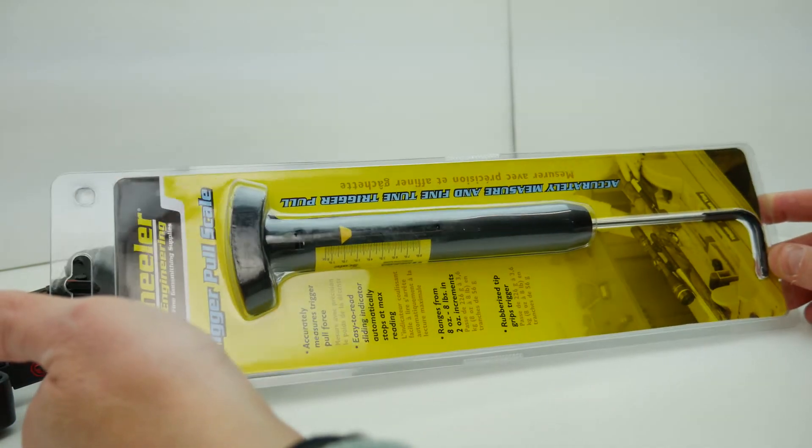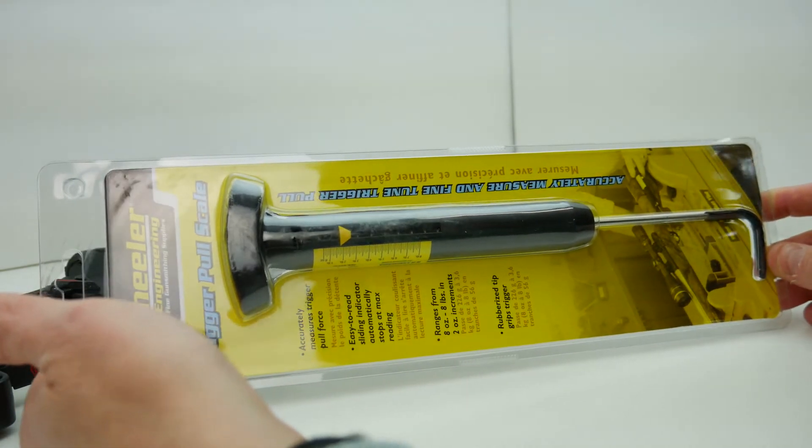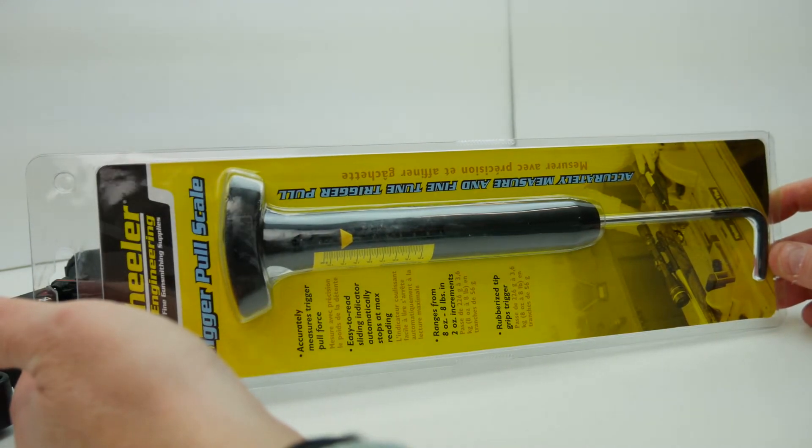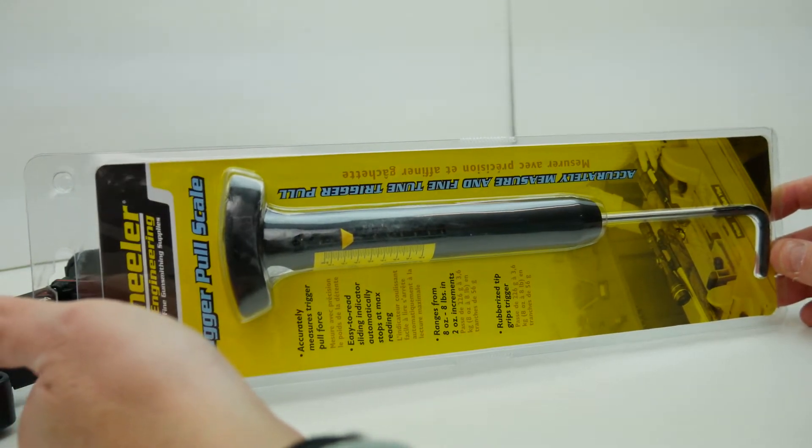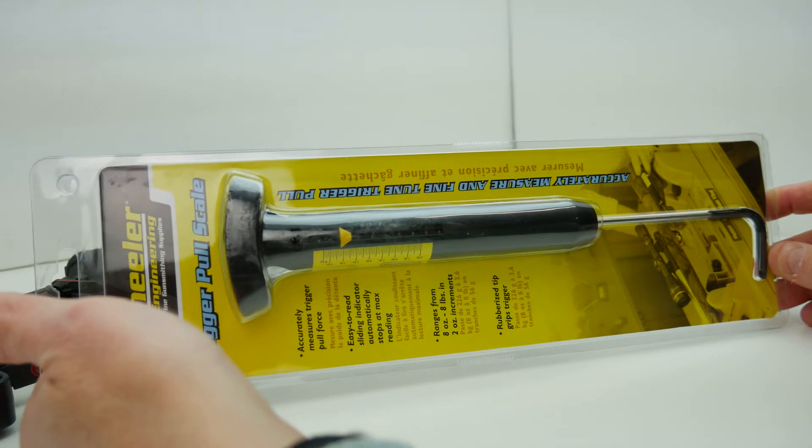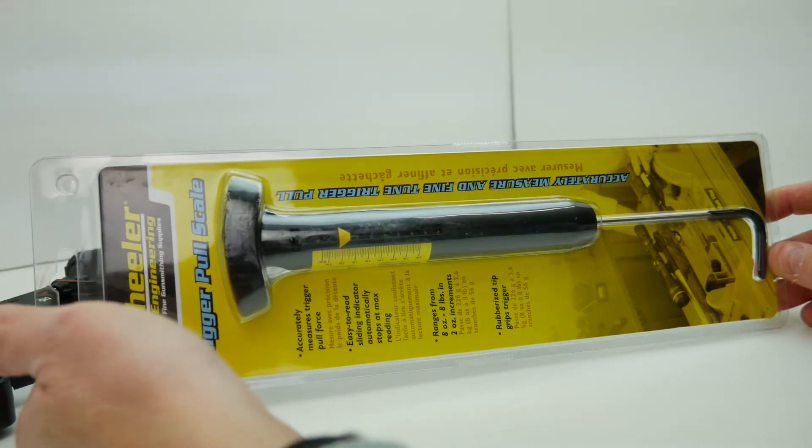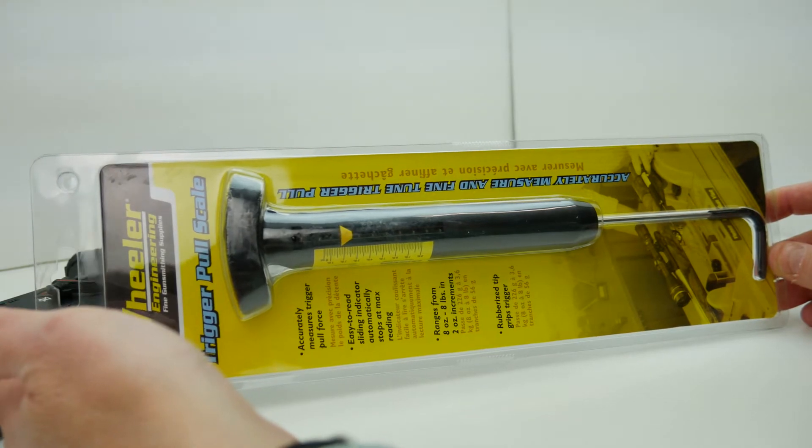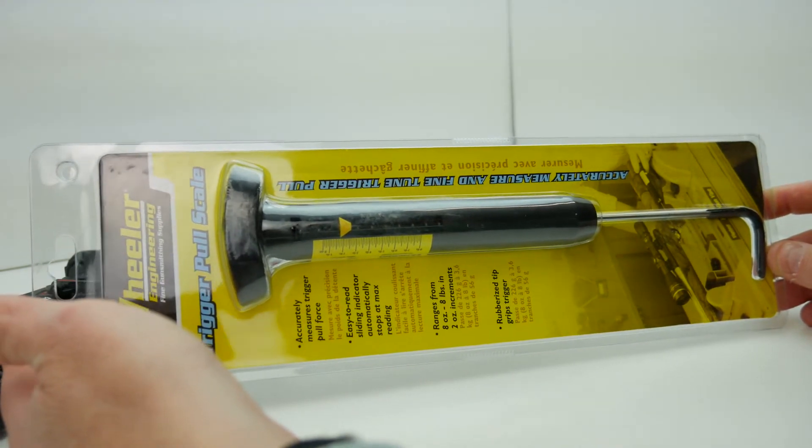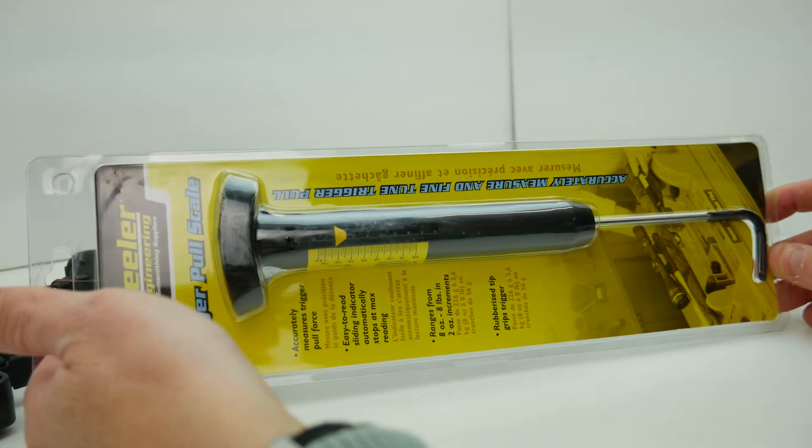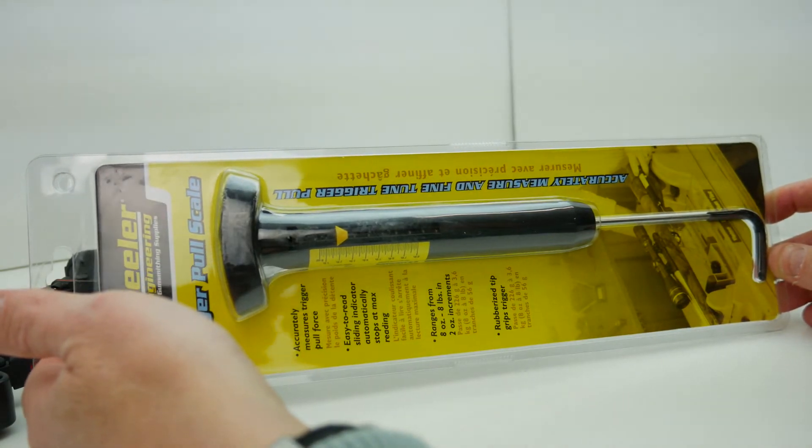So for $20 this is a great buy, something you can add to your toolbox if you're working on pistols and rifles and you're changing out triggers and trigger springs and hammer springs and you want to measure what kind of pull weight you've got after those types of modifications.